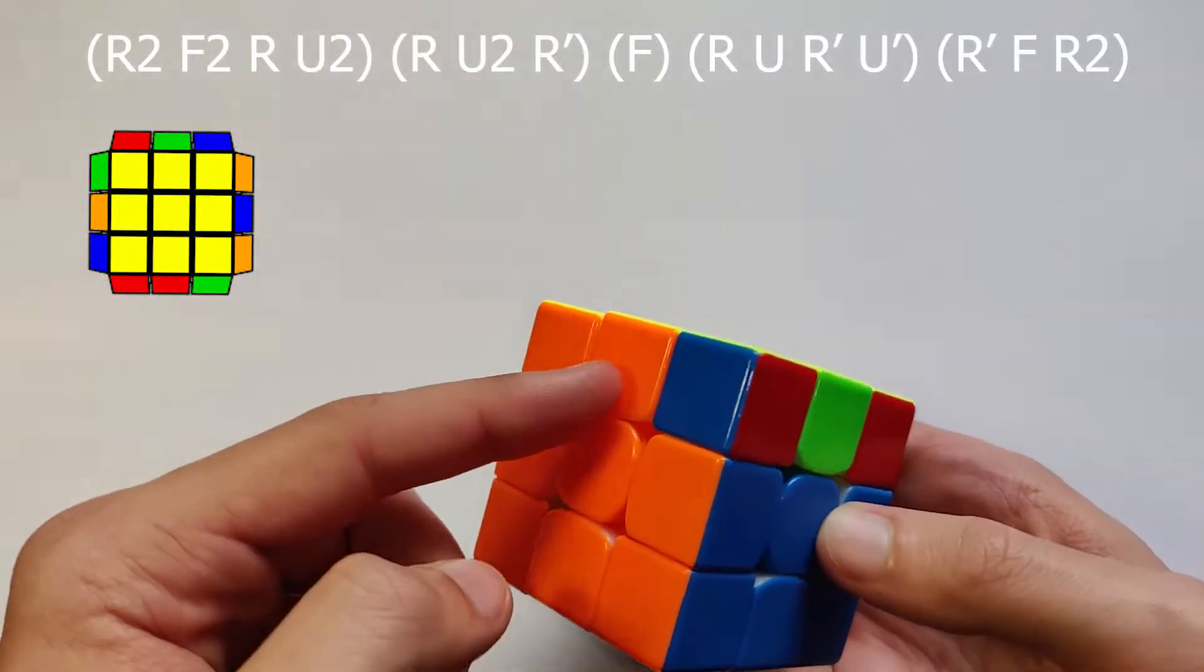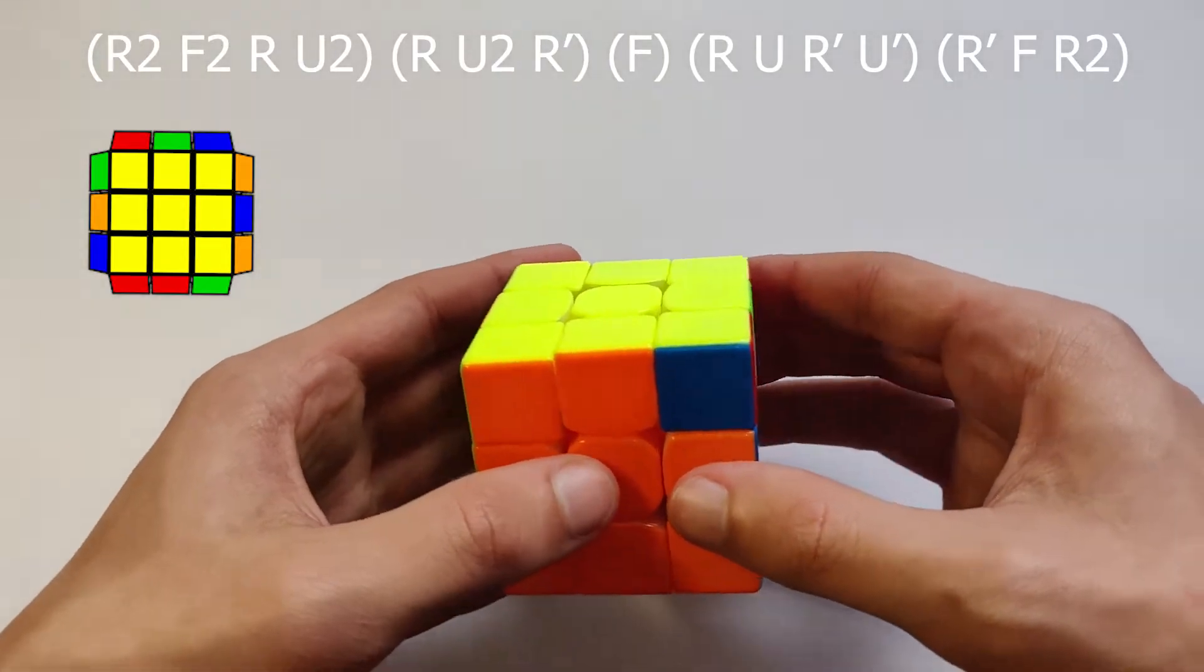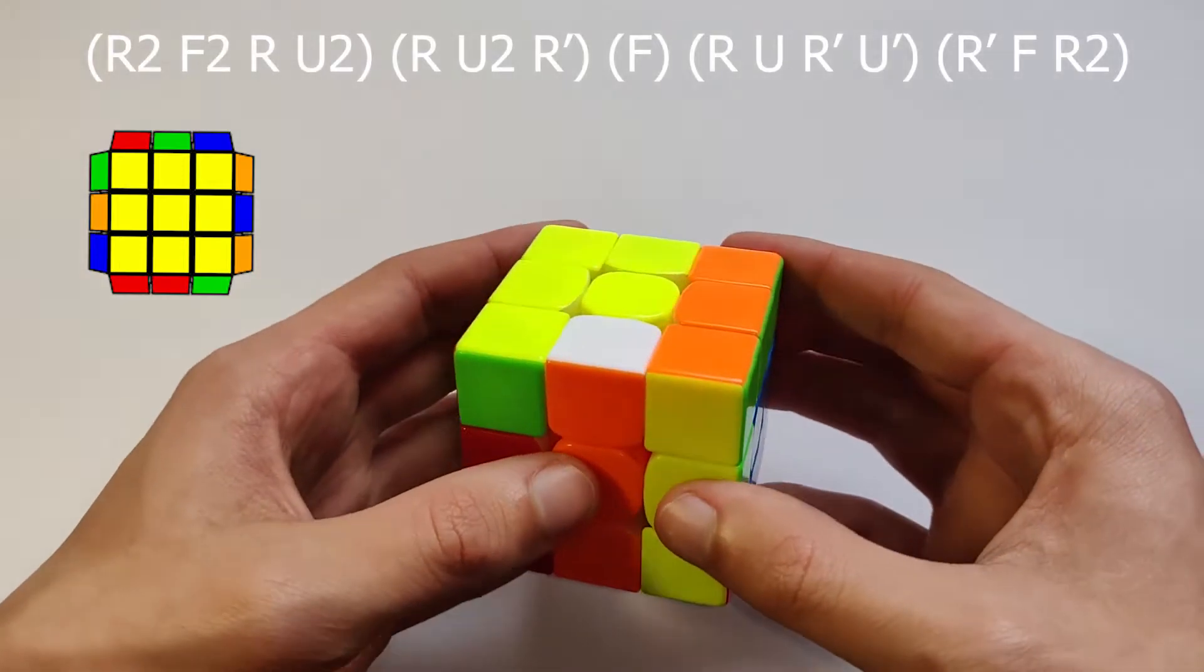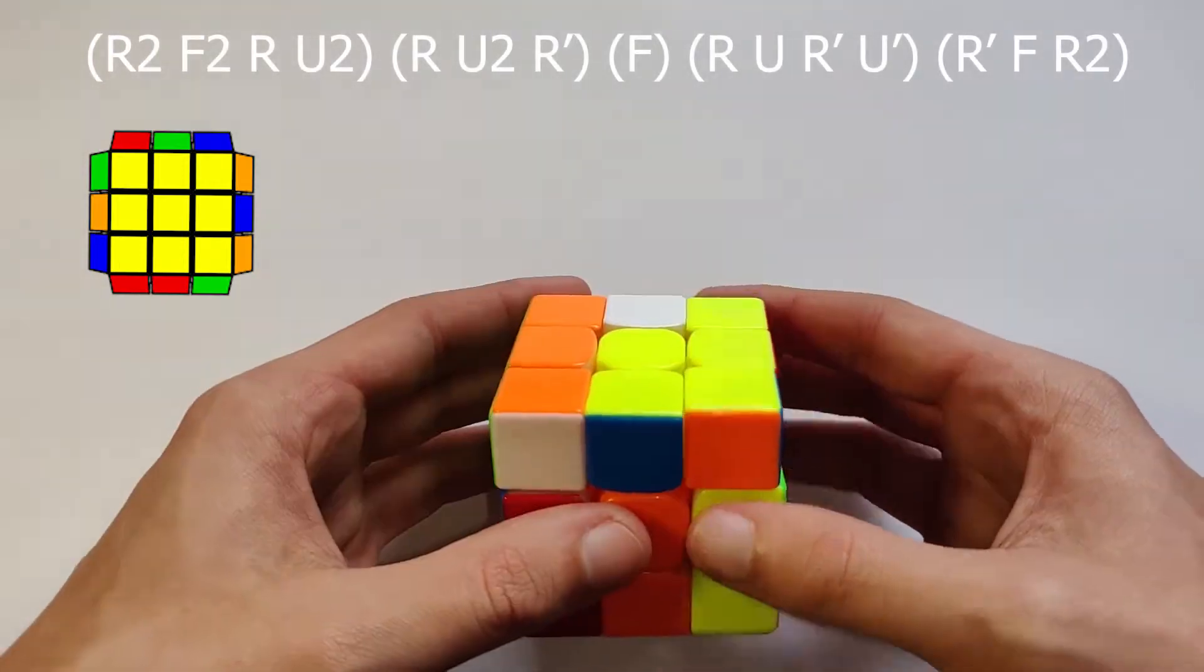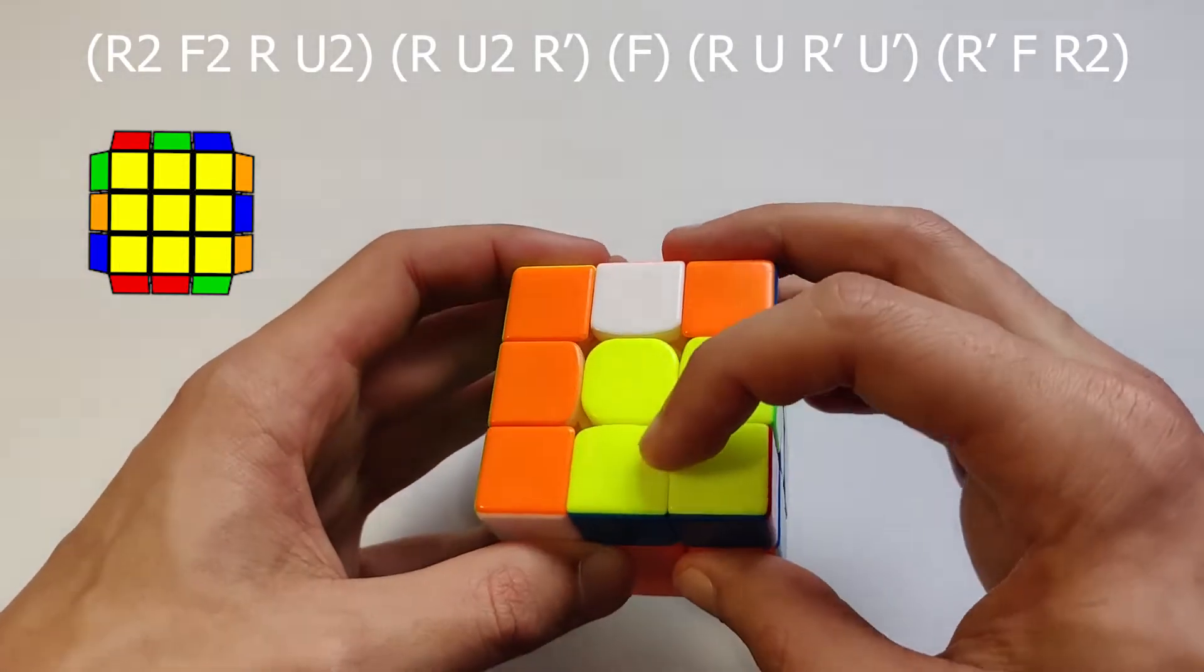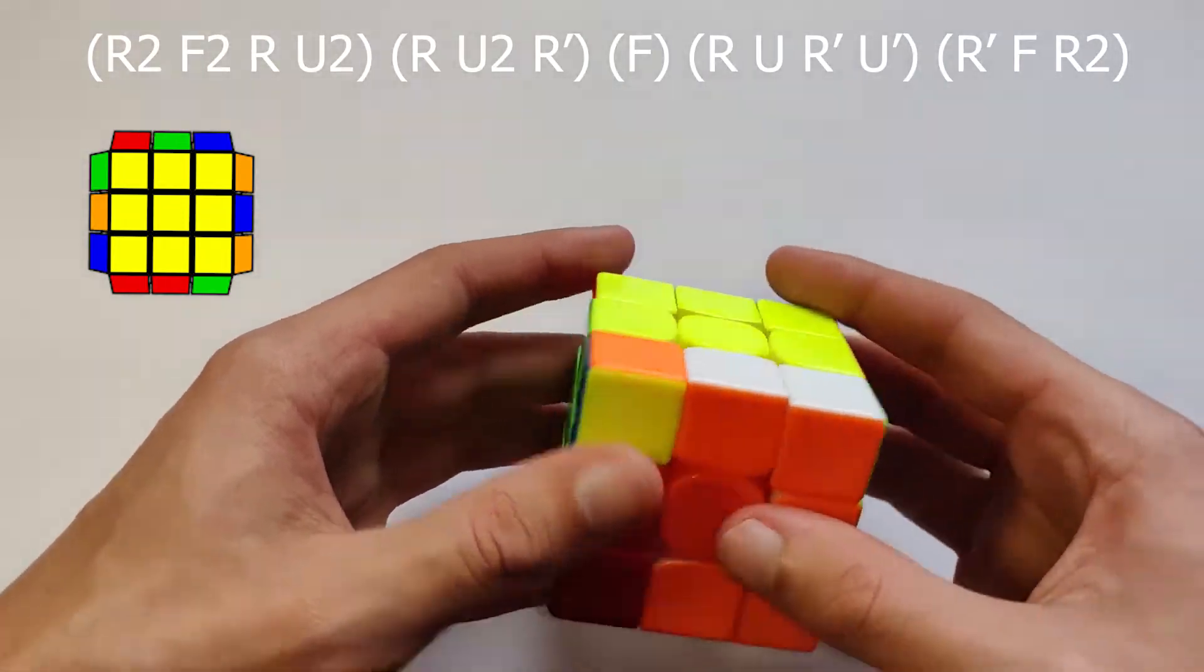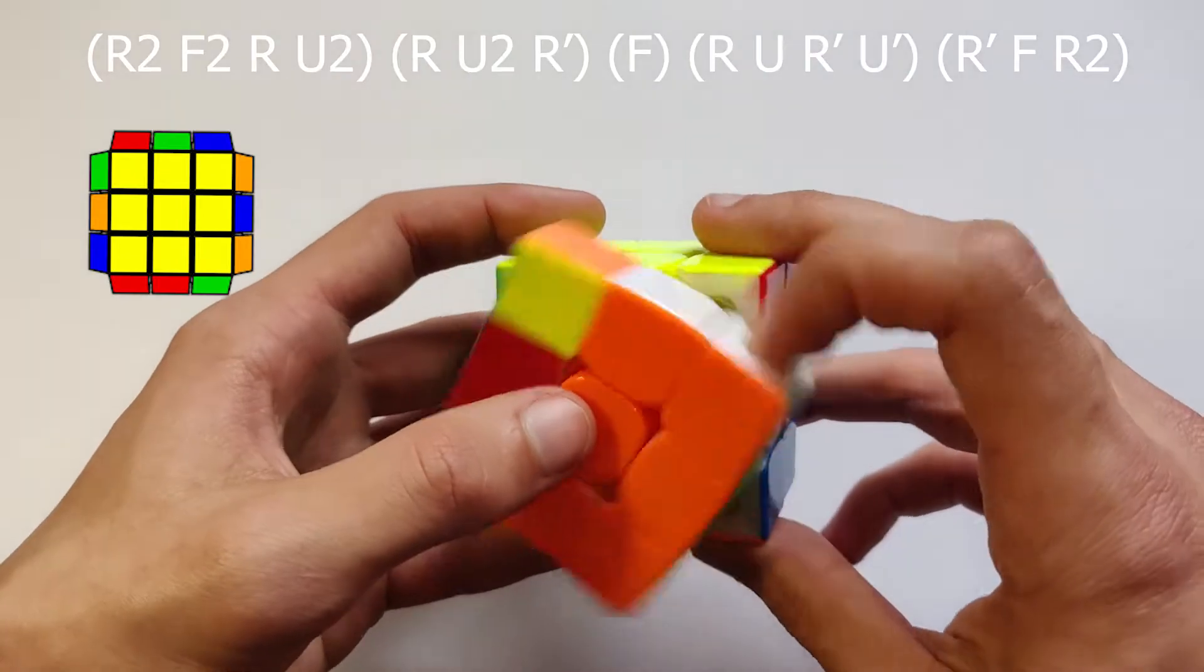Now if the block's on the other side, we just do the same thing. So we go R2, F2, and then up and then U2 again. Bring this up here to make this block here. Spin it around and then put it back down, and then insert it like this.